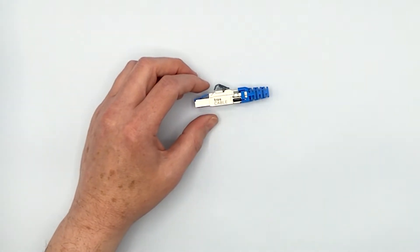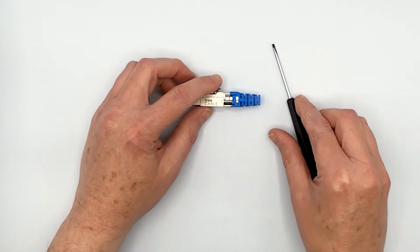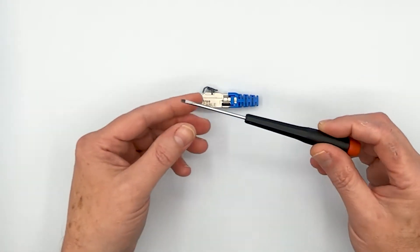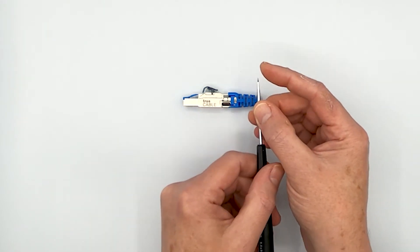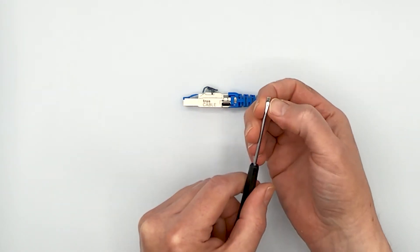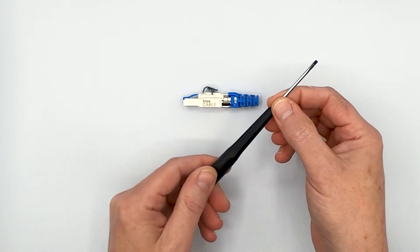So you don't need anything more than a simple jeweler screwdriver. Now this is a precision screwdriver and so it's got a relatively thin ground blade and it's kind of narrow and that's going to make things easy to work with.